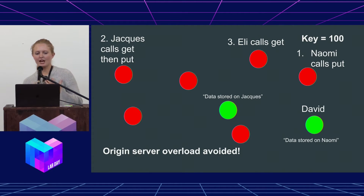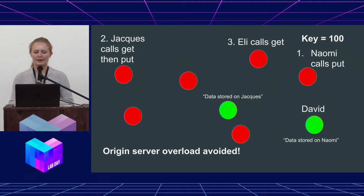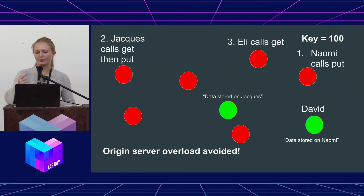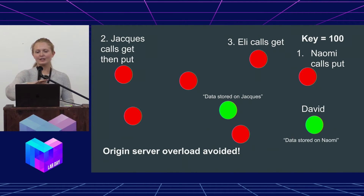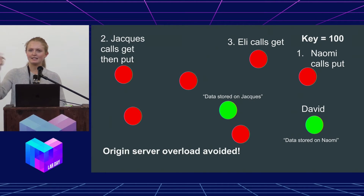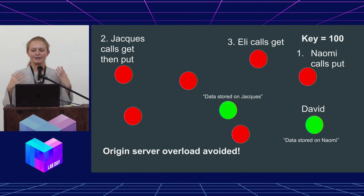Then Jacques hears about this really cool video that's stored somewhere in this Coral DHT, and he says, I want to get 100. As he's querying the DHT, he's also going to be hopping through intermediate nodes until he gets to David. David lets him know it's on Naomi's node, and he gets Naomi's node address. Once he queries Naomi and gets her node address, he's going to call and get the data. So now Jacques is storing the same video that Naomi has.